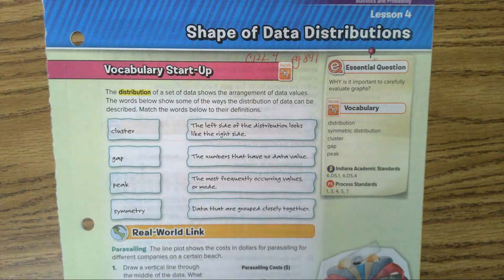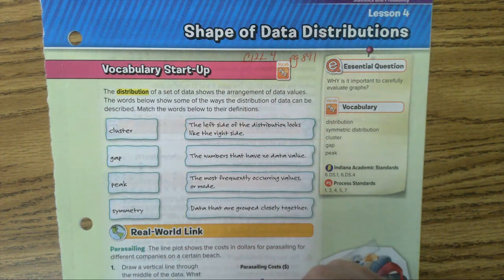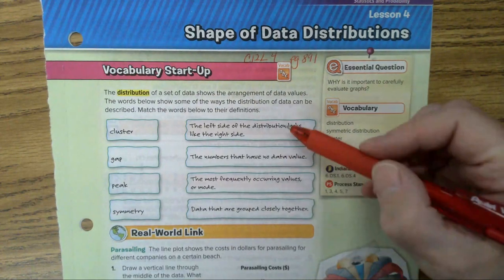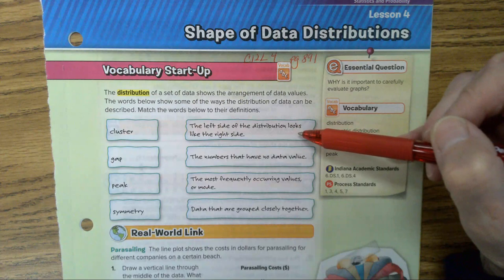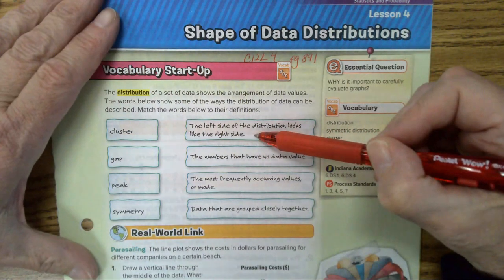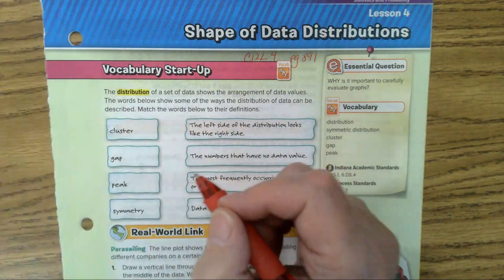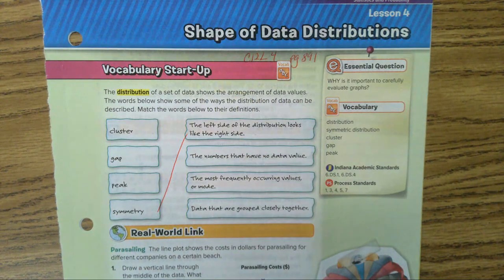Now I like to look at the definition and then go find the word that means the definition. So I'm going to start with this one. The left side of the distribution looks like the right side. Kids, that's called symmetry. So you're going to draw a line here. When the left side looks like the right side, it's symmetrical.